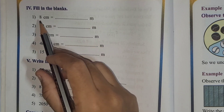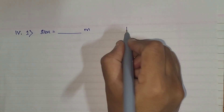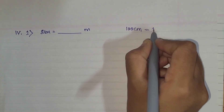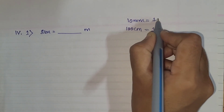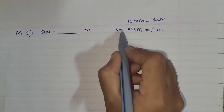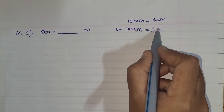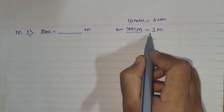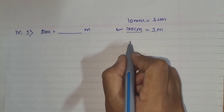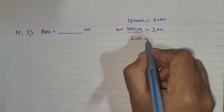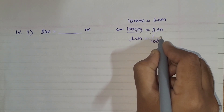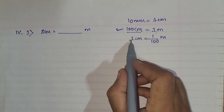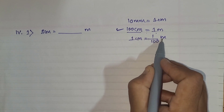Let's take an example: 8 centimeters equals dash meters. We know that 100 centimeters equals 1 meter. Previously, 10 millimeters equaled 1 centimeter. Now, for 1 centimeter, we need 1/100 meter. So 1 centimeter equals 1/100 meter.